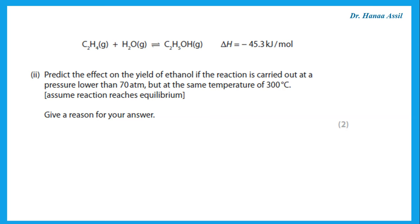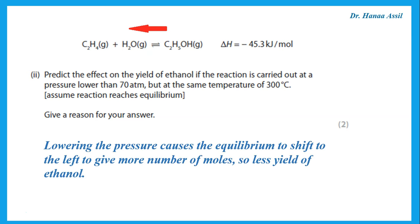Predict the effect on the yield of ethanol if the reaction is carried out at a lower pressure. You should know that in a reversible reaction, lower pressure causes the equilibrium to shift to the side that has more number of moles, while increasing pressure goes to fewer moles. In this case, lowering pressure causes it to go backward because the backward direction forms a total of two moles while the forward direction forms one mole. So lowering pressure causes the equilibrium to shift to the left, breaking up ethanol to form ethene plus water, and the yield of ethanol decreases.